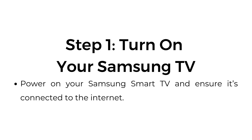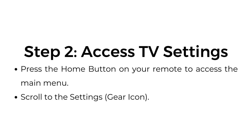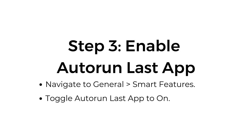Step number one: Turn on your Samsung TV. Power on your Samsung Smart TV and ensure it's connected to the internet. Step number two: Access TV settings. Press the home button on your remote to access the main menu. Scroll to the settings, represented by a gear icon.